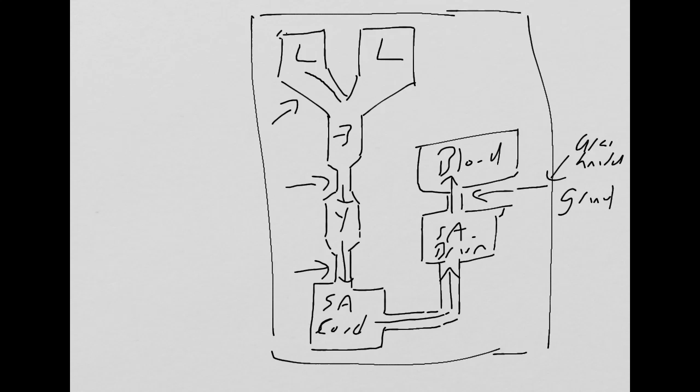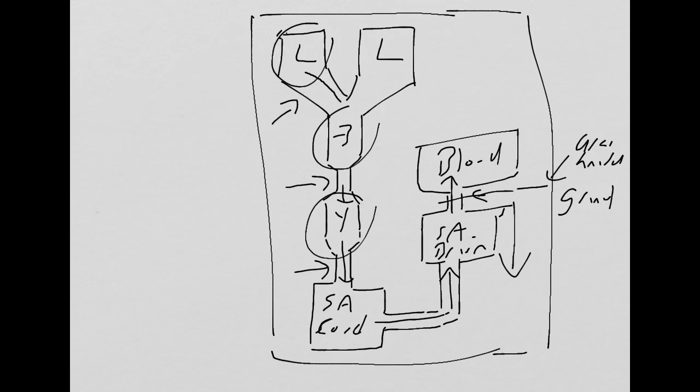As a result, all of the cerebrospinal fluid from this point backwards ends up building up. So, you get an enlargement of the lateral ventricle, you get an enlargement of the third ventricle, you get an enlargement of the fourth ventricle, and that's considered a communicating hydrocephalus.